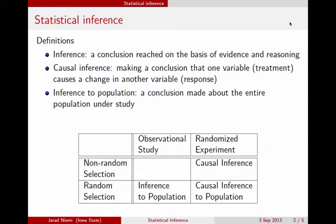The difference between an observational study and a randomized experiment is that in the latter, the randomized experiment, the treatment has been randomly assigned to an individual. The difference between random selection and non-random selection is that the individuals in the study were randomly selected from the population.